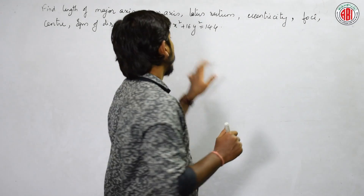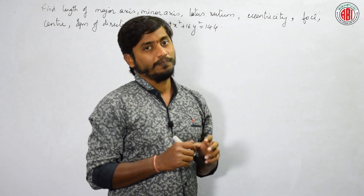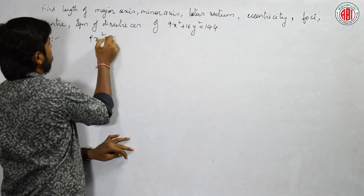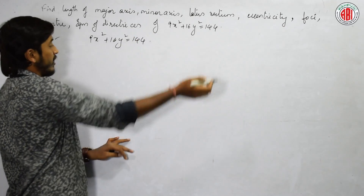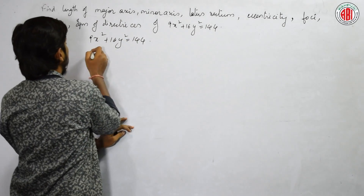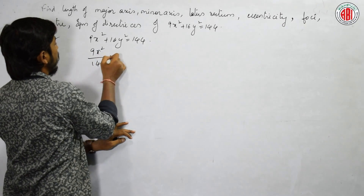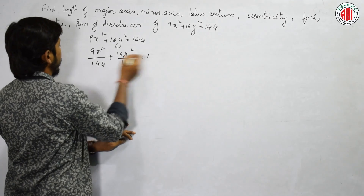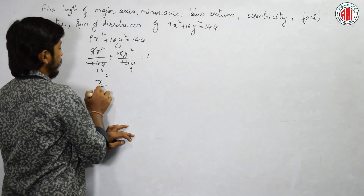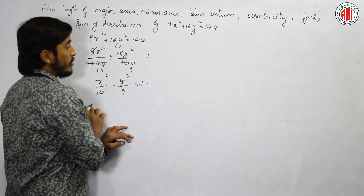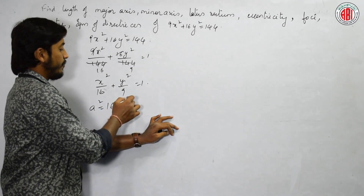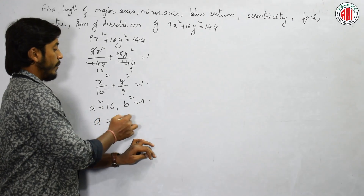First, write the given equation into standard form. We take the equation and note that the constant on the right-hand side is 1, so we divide 144 on both sides. We get 9x²/144 + 16y²/144 = 1, which becomes x²/16 + y²/9 = 1. Comparing with the standard equation, a² = 16 and b² = 9, so a = 4 and b = 3.